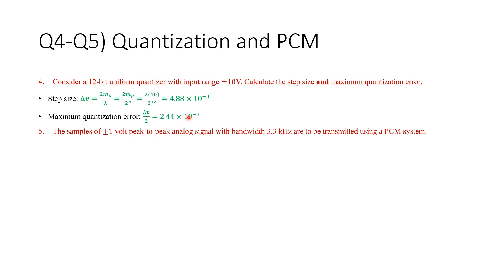Now, for the last part, or for the last question, it says, the samples of plus minus 1 volt peak to peak, this is MP, signal with bandwidth 3.3, are to be transmitted using a PCM system. So, calculate the number of quantization levels and bit per sample required if the peak amplitude signal is to be represented within 0.1% accuracy. We need to convert this into a formula. So, if you want, you can pause the video now and try it. Get back when you are ready.